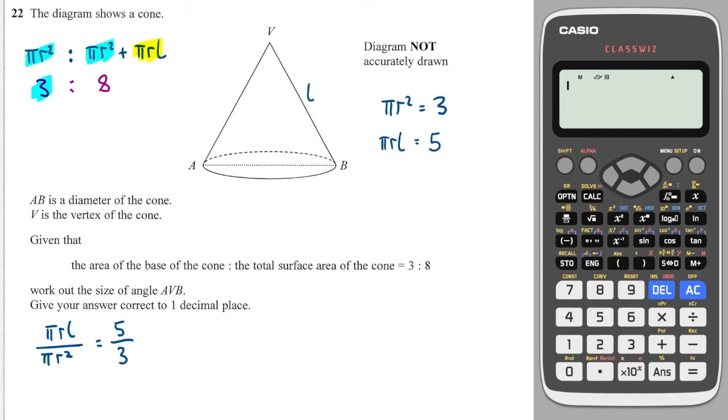So now I can divide top and bottom by π to cancel that. And I can also cancel the r and that will leave me with just one r on the bottom. So this gives me that l over r is equal to 5 over 3. And then I can multiply both sides by 3 and multiply both sides by r, which will give me 3l is equal to 5r. And that tells me that l is equal to 5 thirds r.